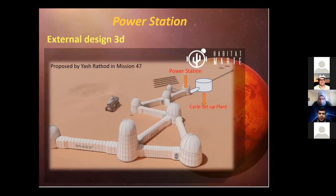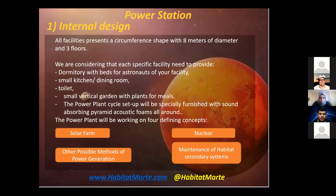This is a 3D view of Habitat Marte showing all the modules, including the power station and cycle setup plant. For the internal design, all facilities have a circumference shape with eight meters of diameter and three rows. Each facility will provide dormitories with beds for astronauts, a small kitchen or dining room, a toilet, and a small vertical garden with plants for meals.